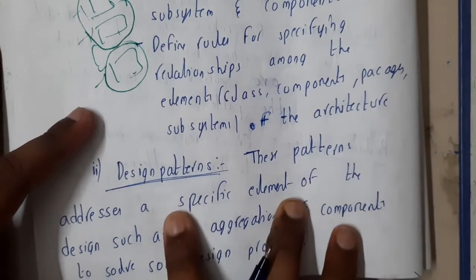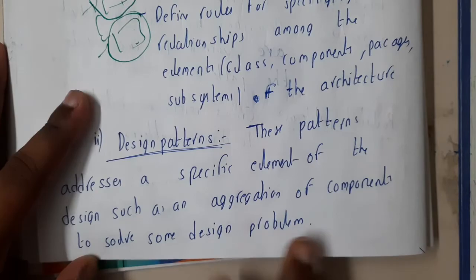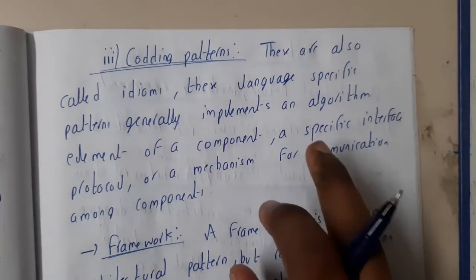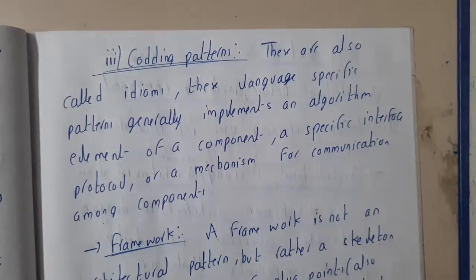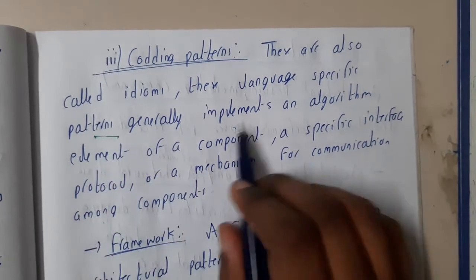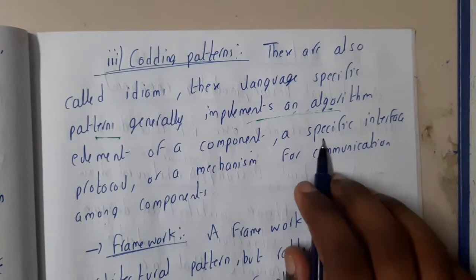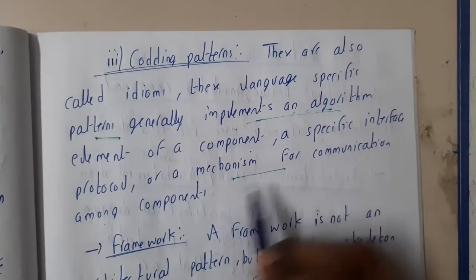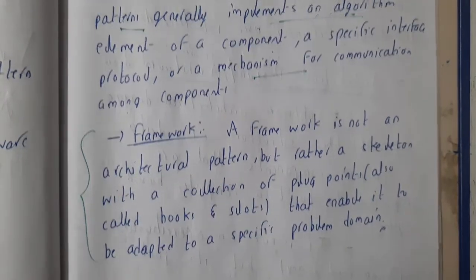Design patterns address a specific element being designed to solve a particular problem. Coding patterns — also called idioms — specify how patterns generally implement an algorithm. These cover elements or components such as a specific interface, protocol, or mechanism for communication among components.